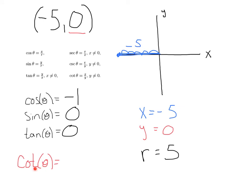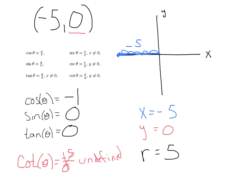Let's do one more. Cotangent theta — cotangent is the reciprocal of tangent, so it's adjacent over opposite, or x over y. That gives us negative 5 over 0. Keep in mind, we can never divide by 0. We have a 0 in the denominator, so cotangent at this point is undefined. Whenever you end up dividing by 0, you're going to end up with an undefined function.